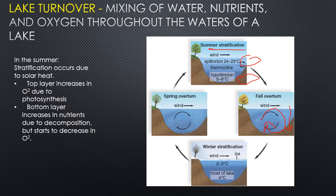In winter, at least slightly north of here, ice forms and acts as an insulator, keeping temperatures uniform. In spring, when temperatures rise the ice melts, cooler water sinks to the bottom, and wind causes warm water to rise — then we're back to summer with intense sun and stratification again.